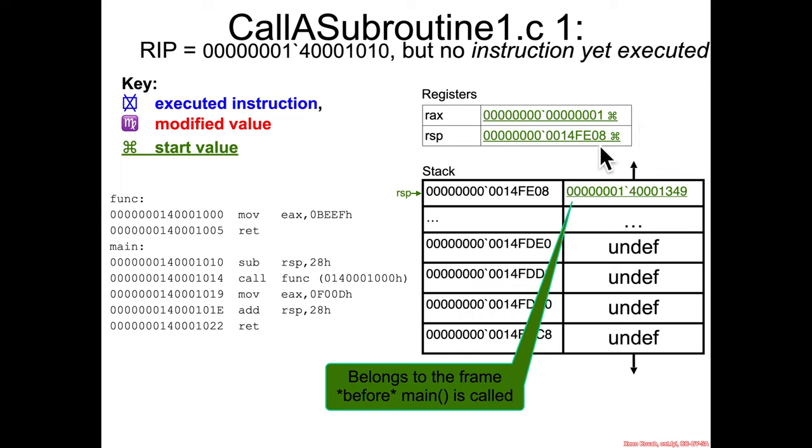RSP is set to 14FE08, somewhere up here on the stack. And it has a particular value stored in it right now, which is going to actually be the return address. Because we're saying we're on this line, but we haven't actually executed it, which means someone somewhere had to call main. When they called main, a return address got placed onto the stack so that we can get back to whatever that code was that called main.